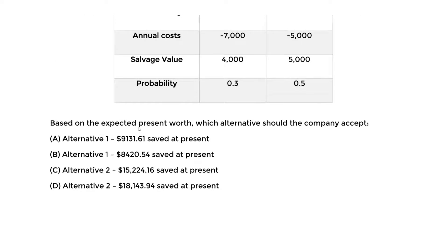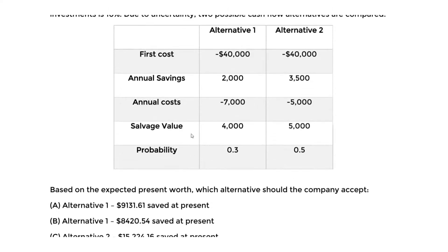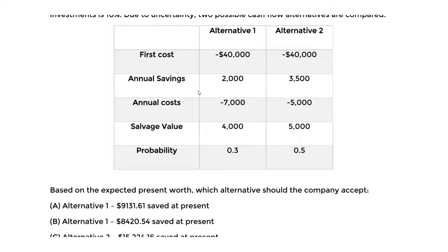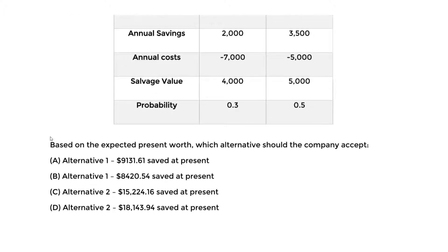We're asked: based on the expected present worth — converting everything to the present — which alternative should the company accept? We need to identify which is most optimal and also determine how much we save with respect to the other alternative.